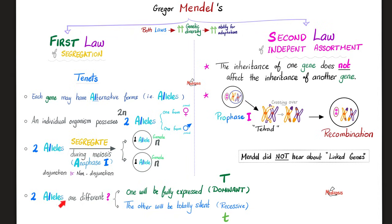What if the two alleles are different? One of them will be dominant, fully expressing the characteristic into the phenotype. The other will be totally silent, phenotypically speaking — and this is the recessive one.